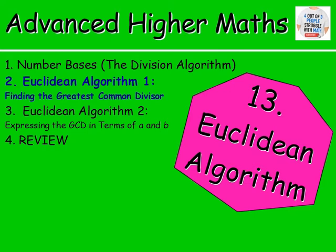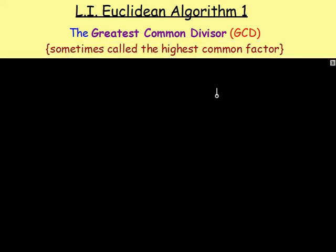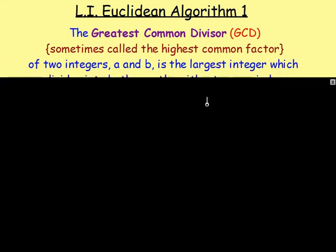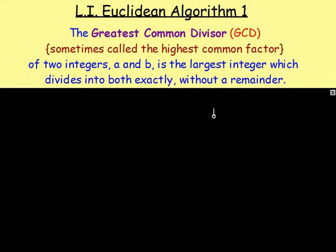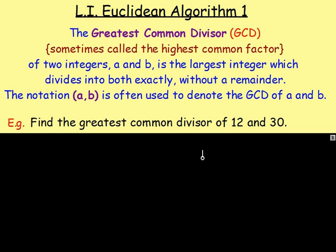Moving on now to look at the Euclidean algorithm and using it to find the greatest common divisor. The greatest common divisor, which is also called the highest common factor, of two integers A and B, is the largest integer which divides into them both exactly without a remainder. The notation (A, B) in brackets is used to denote the greatest common divisor of A and B.